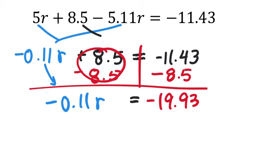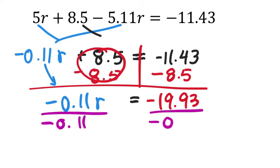The last thing is to divide both sides by the coefficient negative 0.11 — not dividing by r, just the negative 0.11. That leaves me with r. r equals: negative 19.93 divided by negative 0.11 — be careful not to forget the decimal. That comes out as 181.18 repeating. I'll round to the nearest hundredth: 181.18.